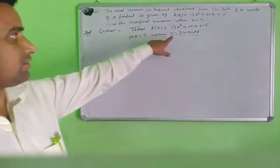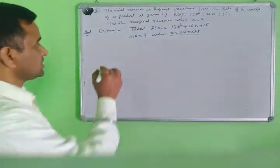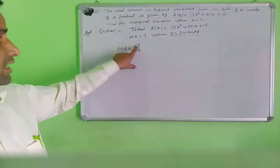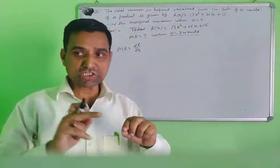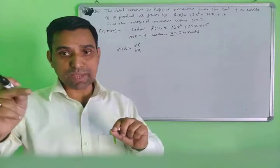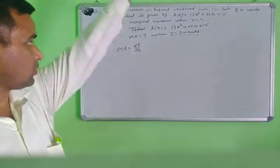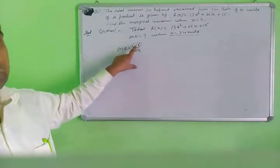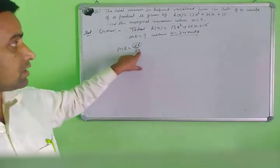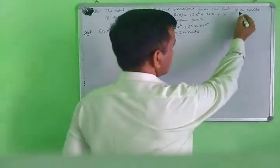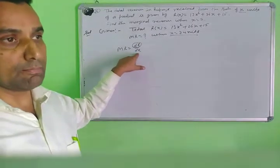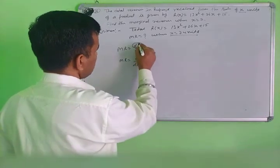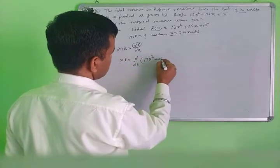Marginal revenue equals dr over dx — the rate of change of total revenue with respect to the number of units sold. Given: total revenue R(x) equals 13x squared plus 26x plus 15. Marginal revenue equals d over dx of R(x) equals d over dx of 13x squared plus 26x plus 15. Differentiating: marginal revenue equals 26x plus 26.